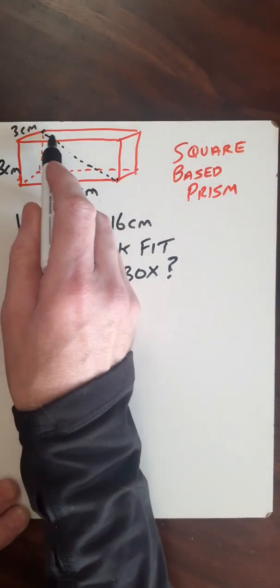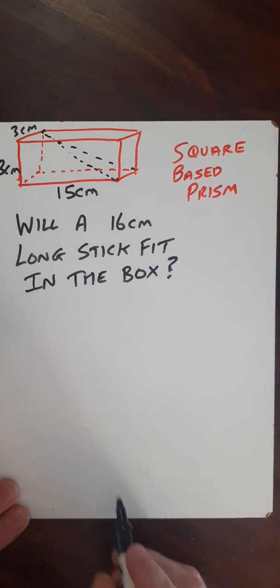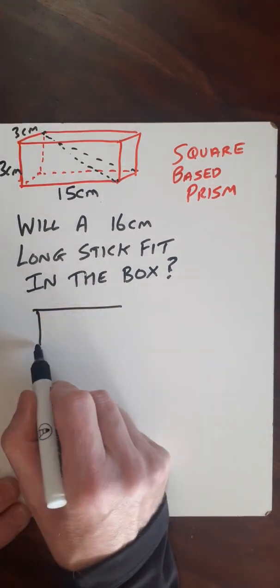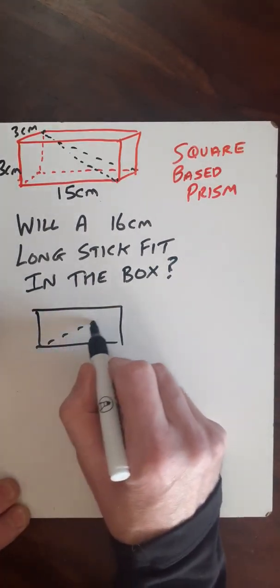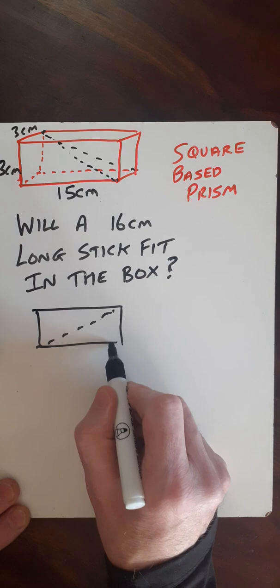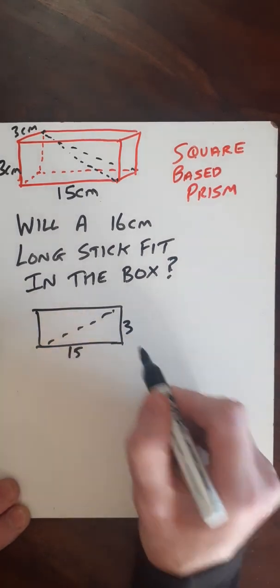First of all, let's calculate the length of this back dimension. If I bring this out separately, I'll have a dimension that looks something like this - the hypotenuse of that. I'll have 15 by 3.